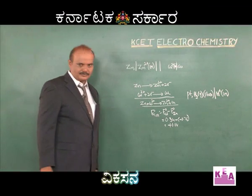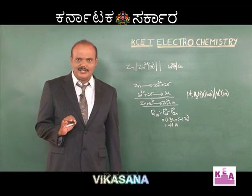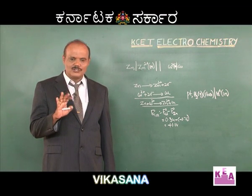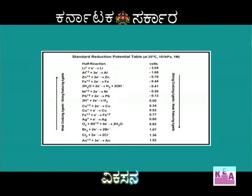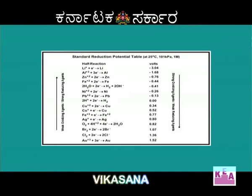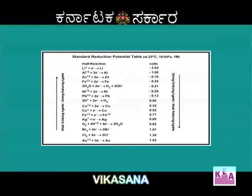After knowing the SRP of all electrodes, you should know some important information regarding SRP values. The element with lesser SRP acts as a good reducing agent. The element with higher SRP acts as a good oxidizing agent. The element with lesser SRP is more reactive, while the element with higher SRP is less reactive.